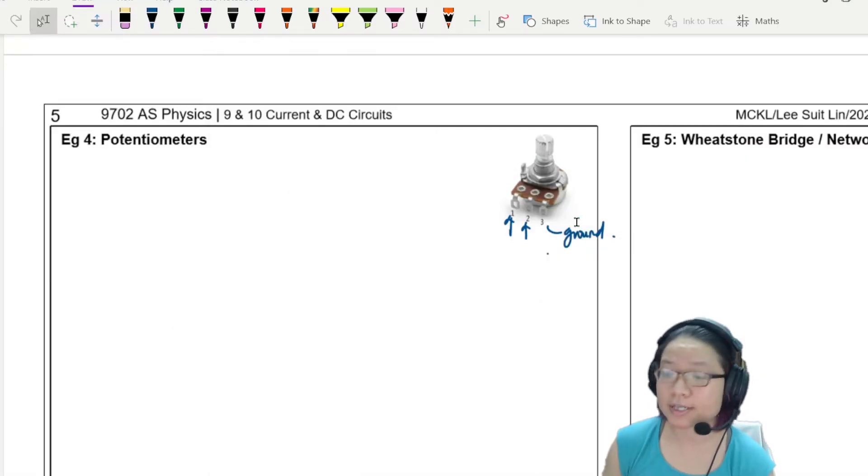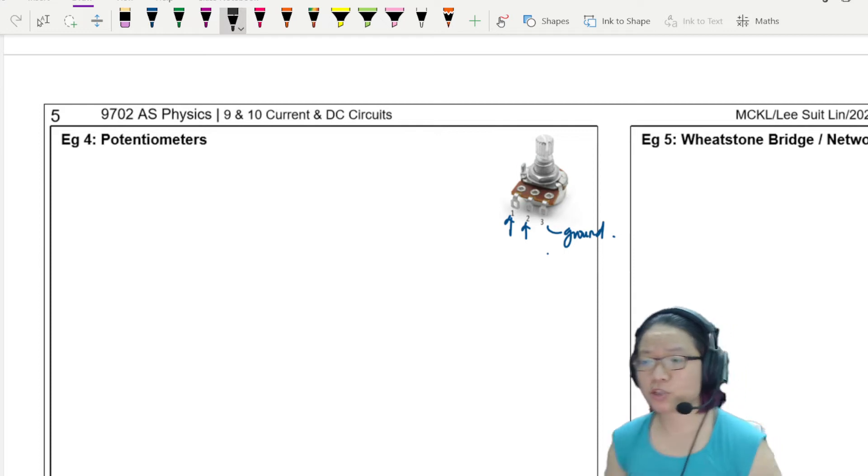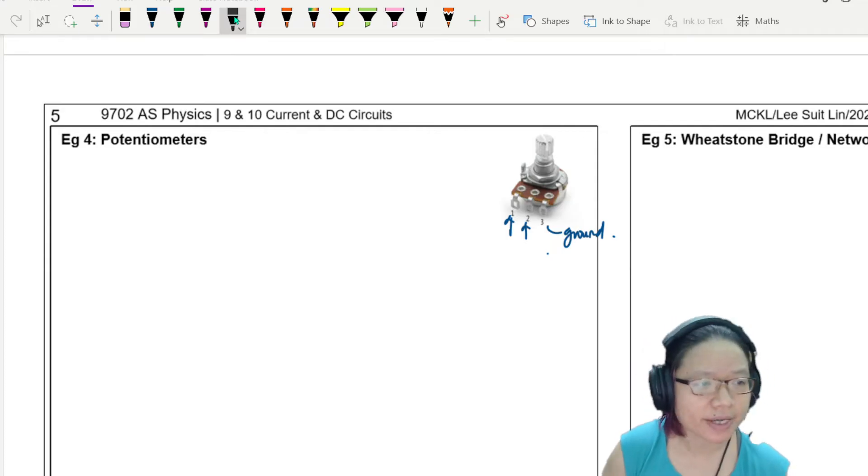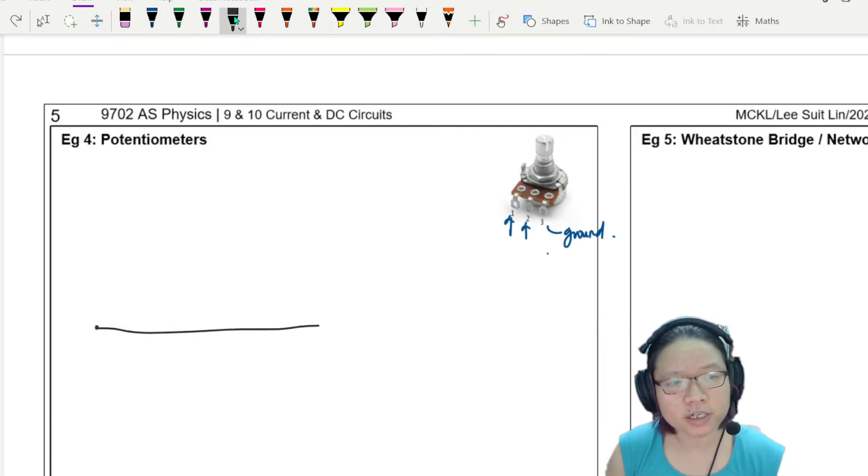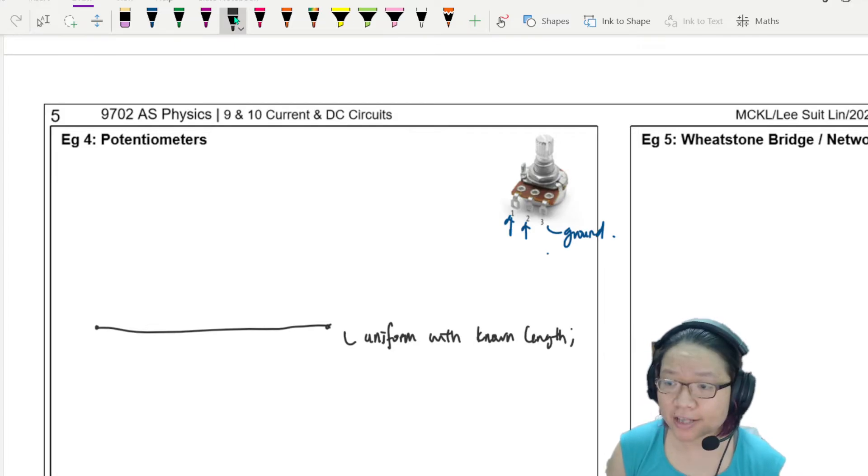And then you can actually read carefully whether you are using 10 cm of the wire or 20 cm of the wire. So to represent this in a circuit drawing, what I will do is I will first draw out the wire. The wire is your main character. So the potentiometer circuit will consist of a wire. Here is a uniform wire with known length.